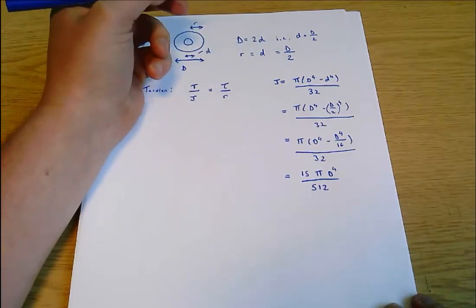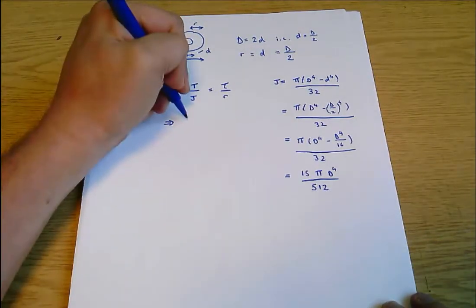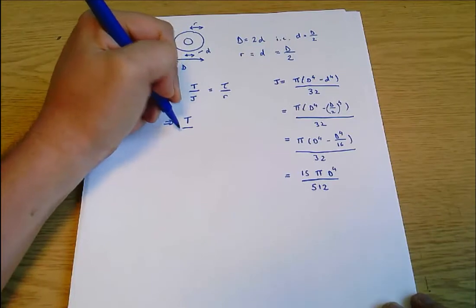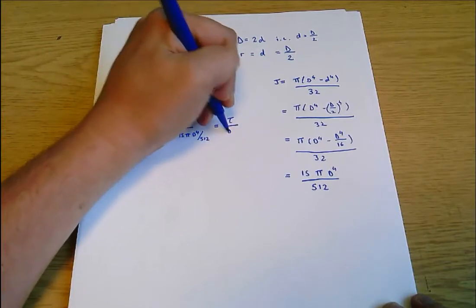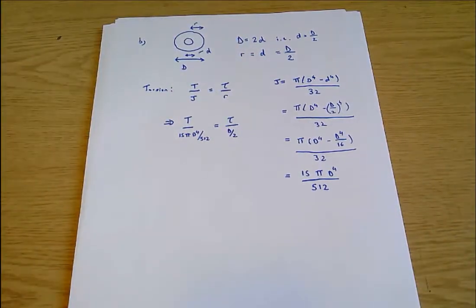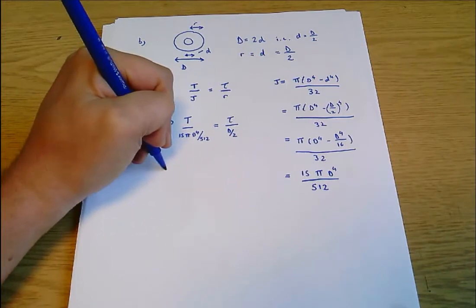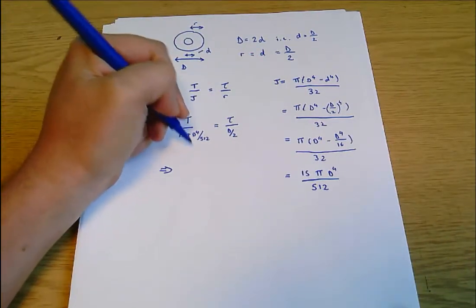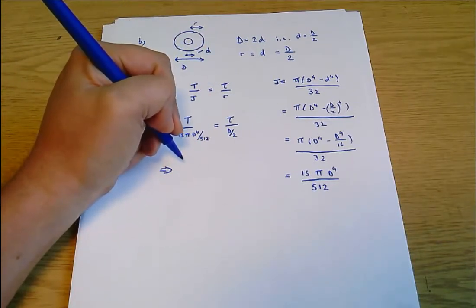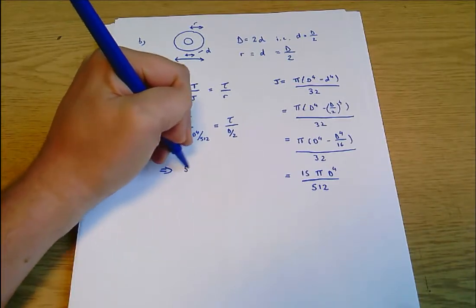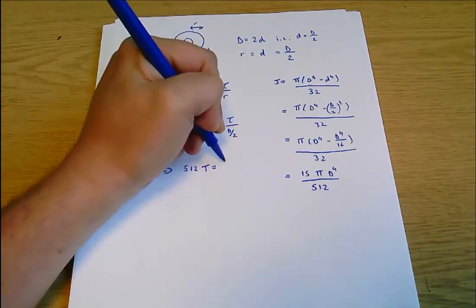Remember that r equals small d but it equals capital D over 2. So rearranging all of this I get that t over (15π D to the 4 over 512) equals τ over (capital D over 2), substituting in for j and r. Now rearranging, this is a bit trickier. I'm going to do this in steps, getting everything to the top lines first. That will give me 512t equals 2 times 15π D to the 4 times τ divided by D.